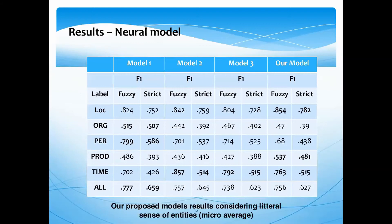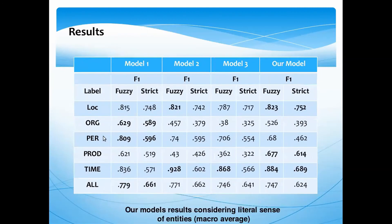Here are our proposed model results considering literal sense of entities, using micro average. Our model, which is the fourth one, performs better than the others on LOC, PROD, and TIME entities. However, the statistical model augmented with orthographic features performs better than the others on ORG and PERSON entities.